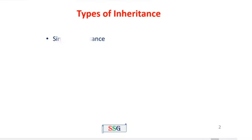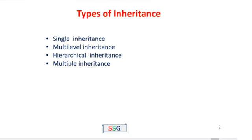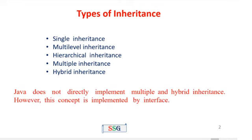Types of inheritance. Inheritance can be classified into five major types: first, single inheritance; second, multi-level inheritance; third, hierarchical inheritance; fourth, multiple inheritance; and fifth, hybrid inheritance. Java does not directly implement multiple and hybrid inheritance. However, this concept is implemented using the interface concept.